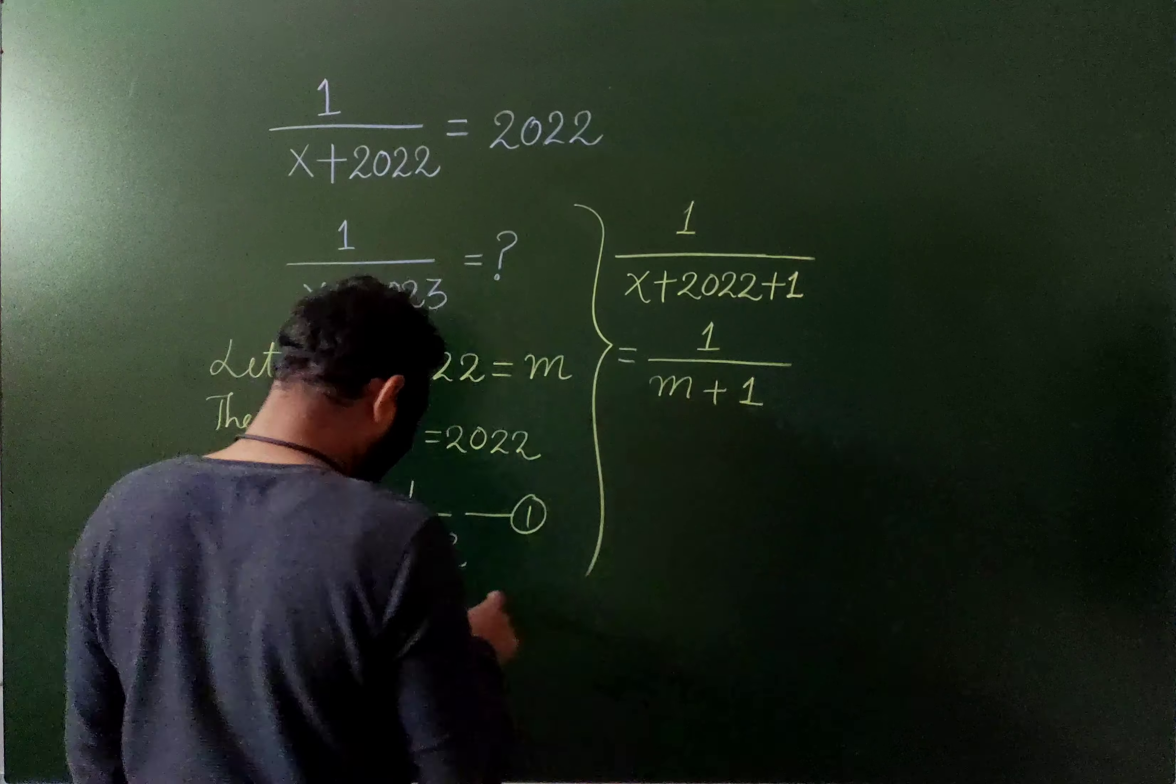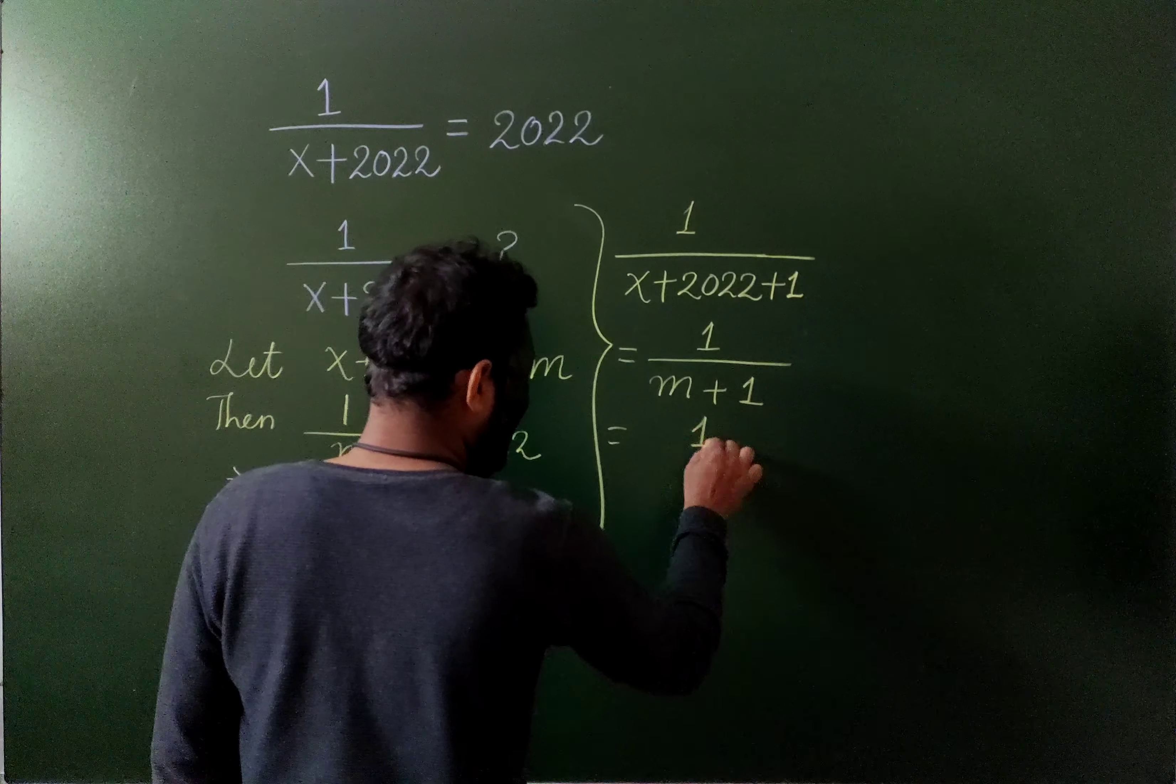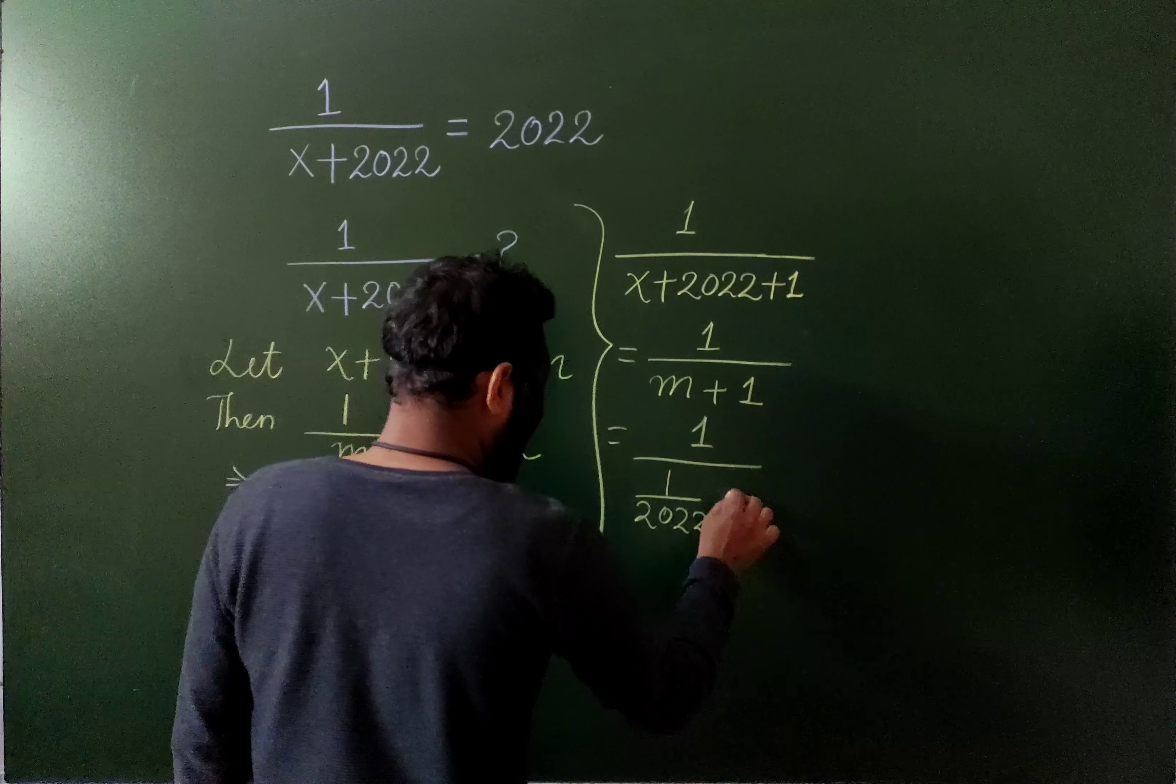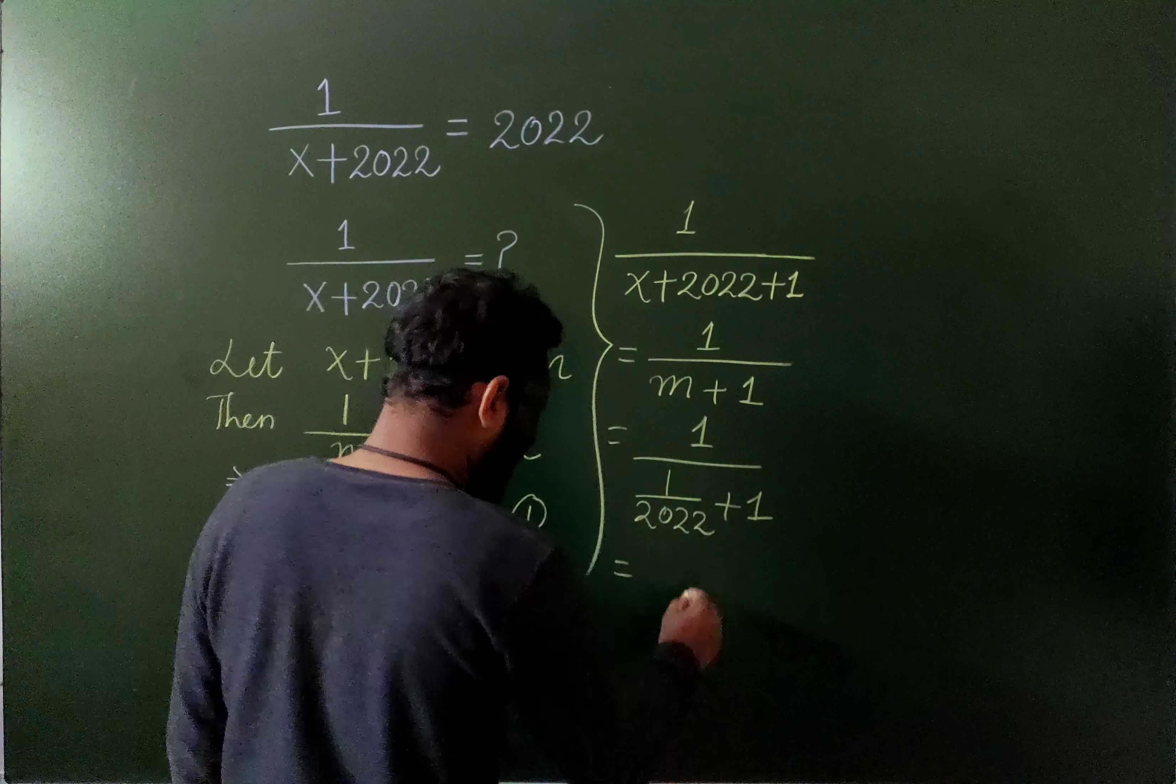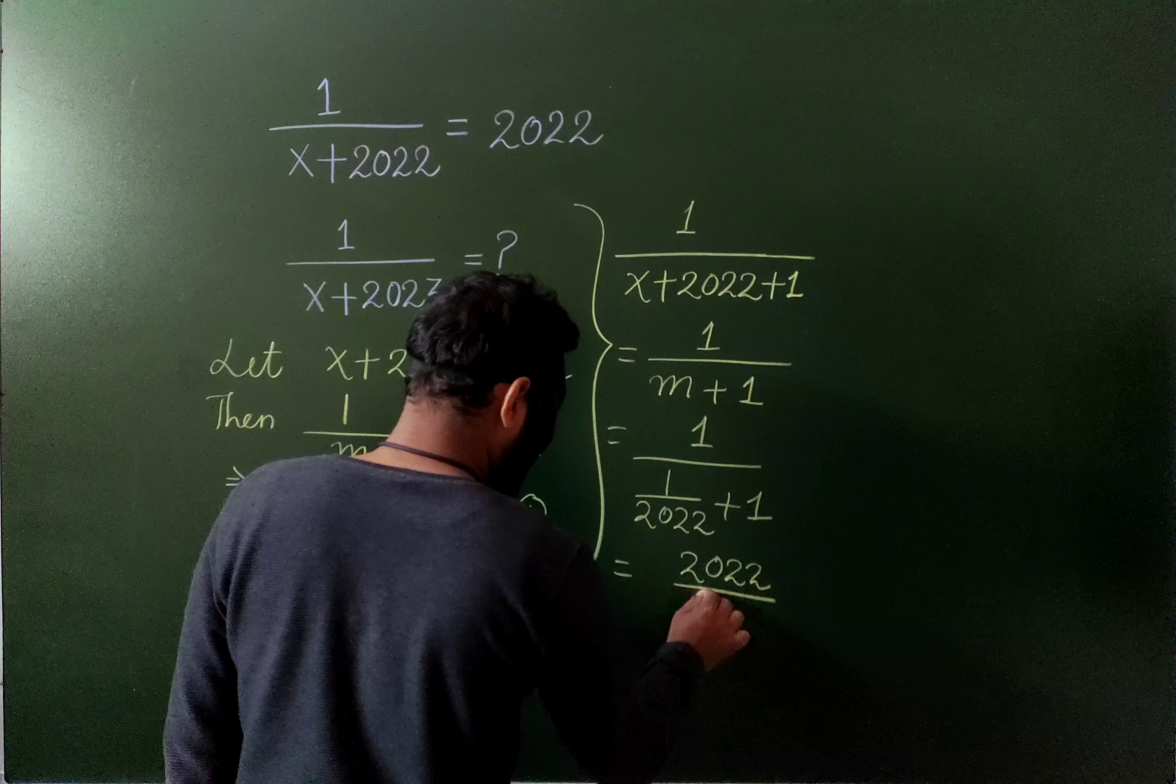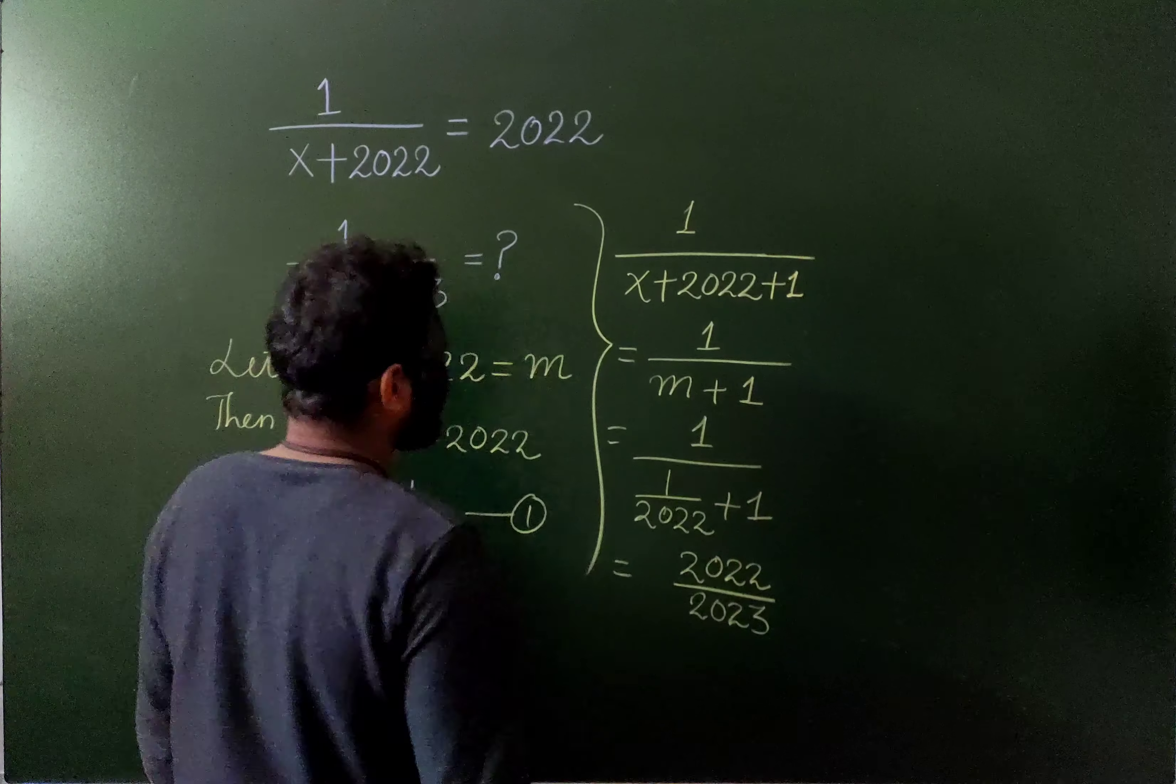And you know that m is this much. So 1 by 1 by 2022 plus 1, and this equals to 2022 by 2023. That's the answer.